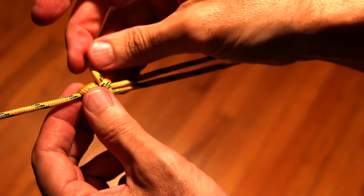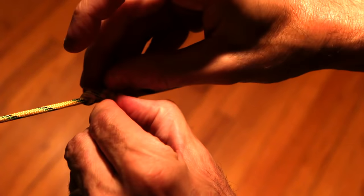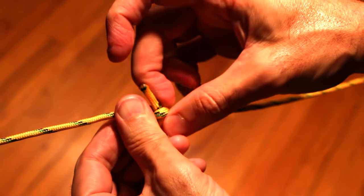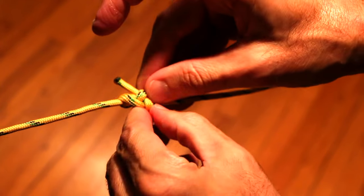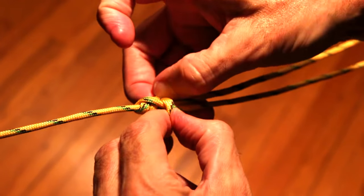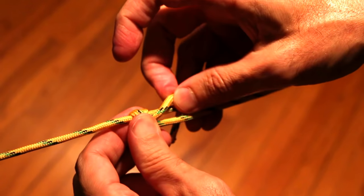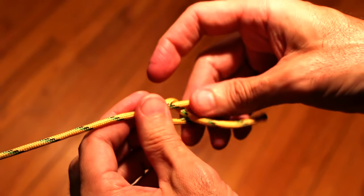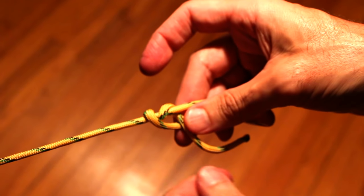So try it out, see what you think. You may really like the arrowhead alternative to the taut line hitch and have fun.